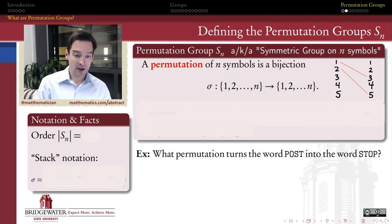For example, if I have five symbols, then any way in which I can jumble up these five symbols by taking one and assigning it to three, two to five, three to one, four to four, five to two—that's one example of a permutation of five symbols, thought of as a function.